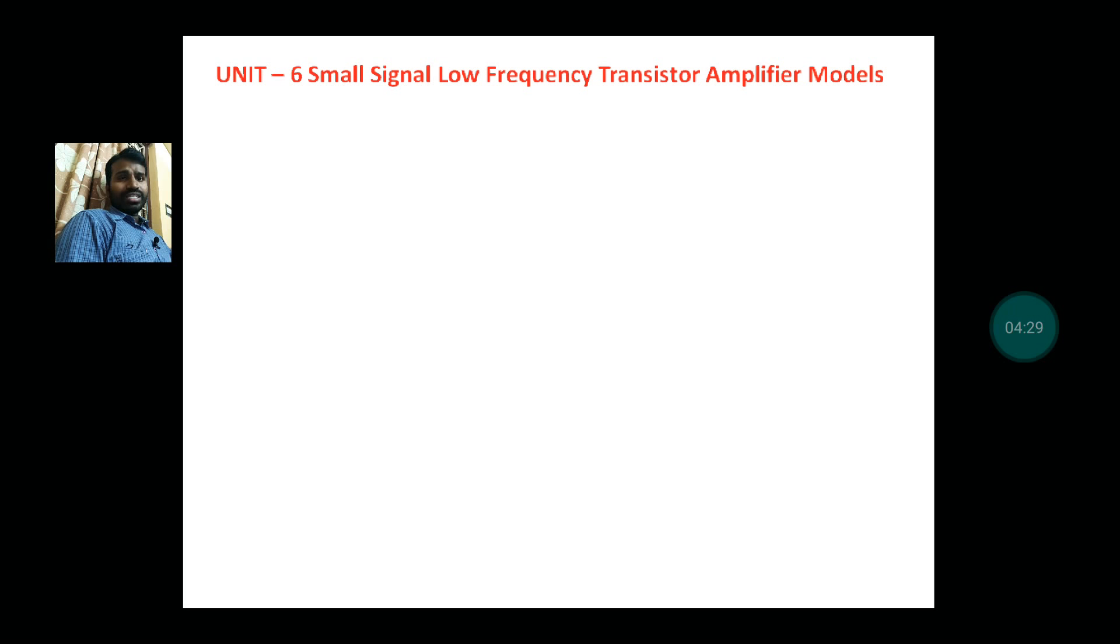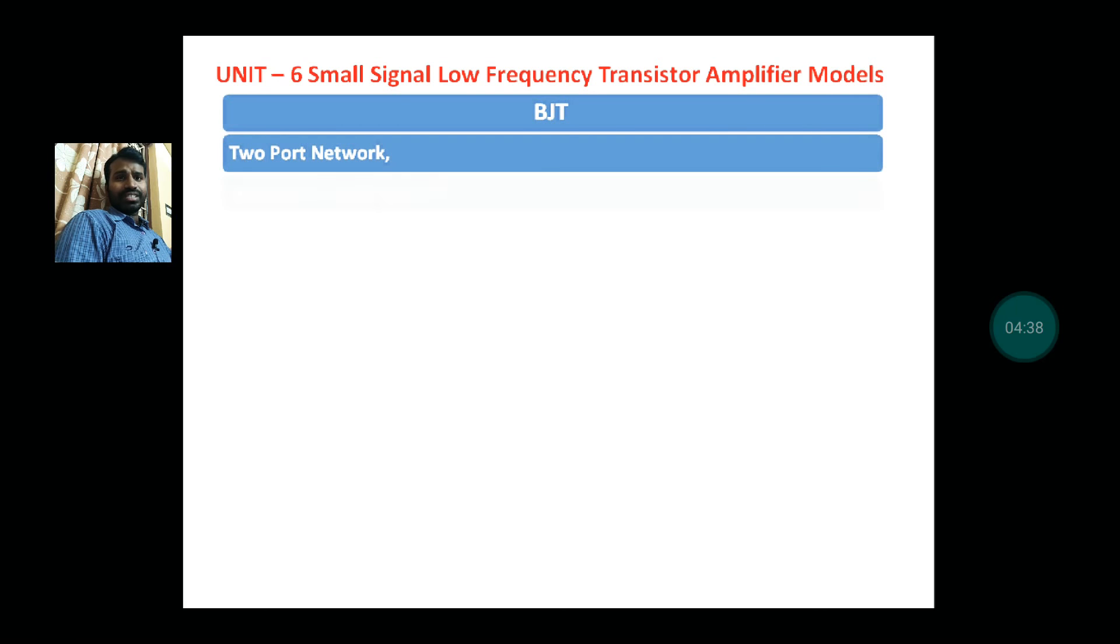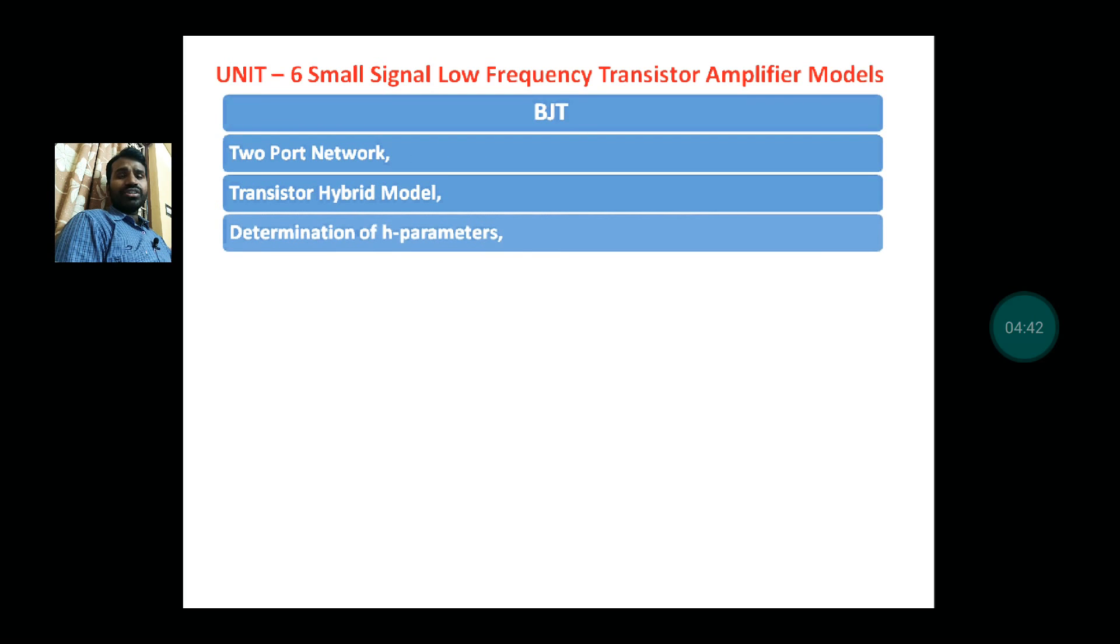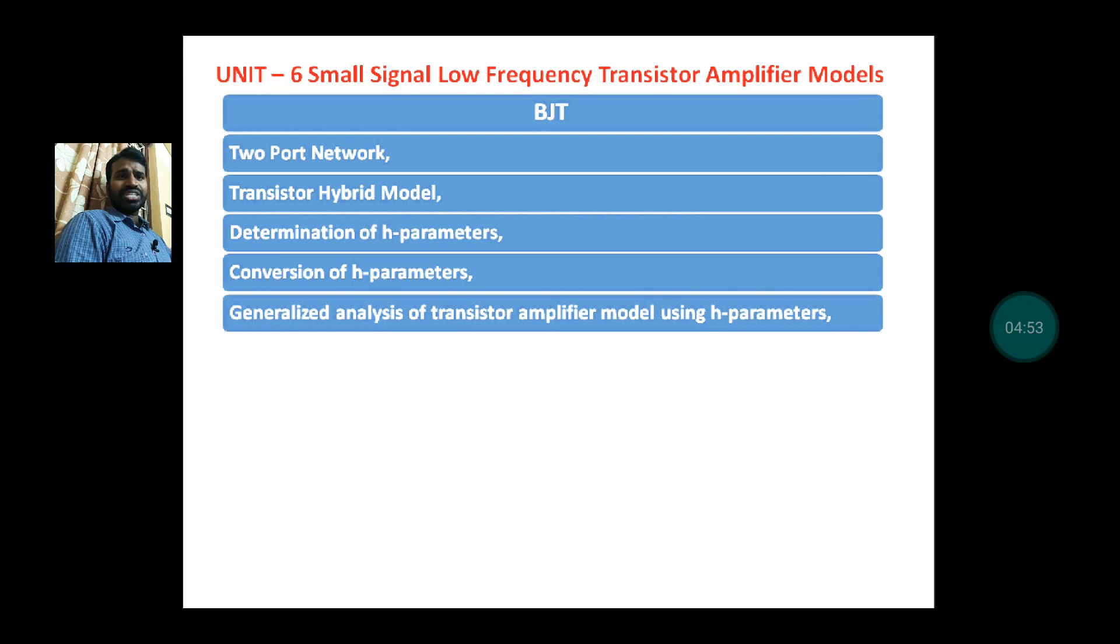Unit 6: Small Signal Low Frequency Transistor Amplifier Models. Topics are BJT—two-port network, transistor hybrid model, determination of h-parameters, then conversion of h-parameters.